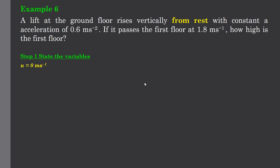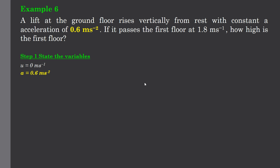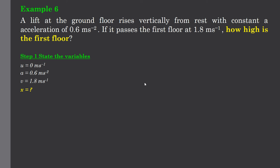So our variables. We start off from rest. That's an initial u of 0 meters per second. Our acceleration accelerates, it's positive. So that's 0.6 meters per second per second. And our final velocity at the end of our story is 1.8 meters per second. It's sped up. And I want to know how high the first floor is. What was the distance it travelled when accelerating from 0 to 1.8 meters per second at a rate of 0.6 meters per second per second?